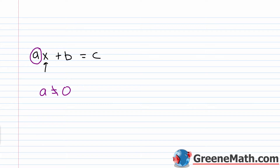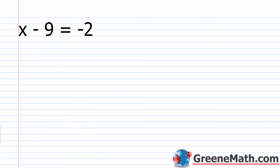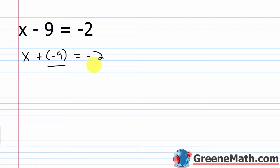In the last lesson, we looked at the case where a was 1 — we had 1x plus b equals c. Anything times 1 is just itself, so really we saw x plus b equals c, x plus some number equals some other number. As an example, we have x minus 9 equals negative 2, which I could rewrite as x plus negative 9 equals negative 2.